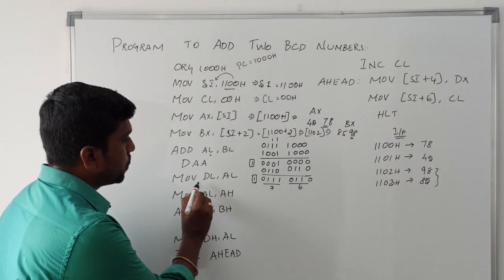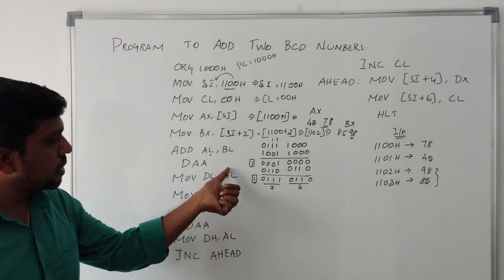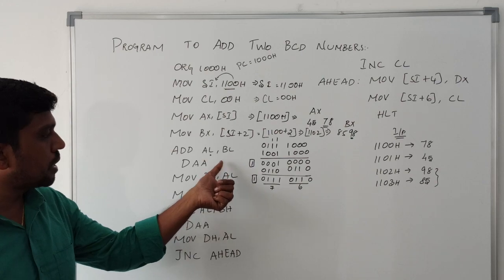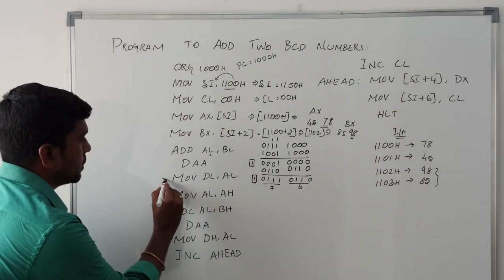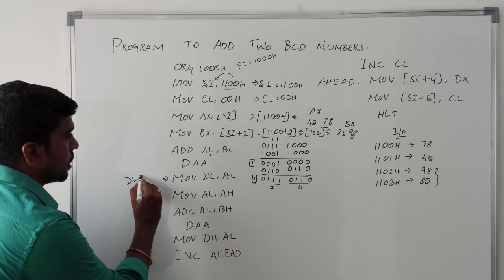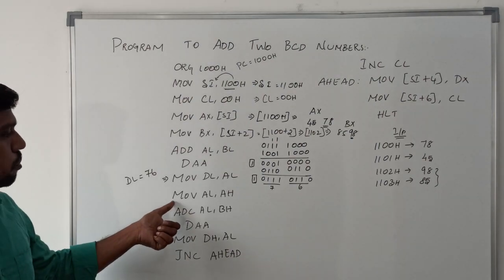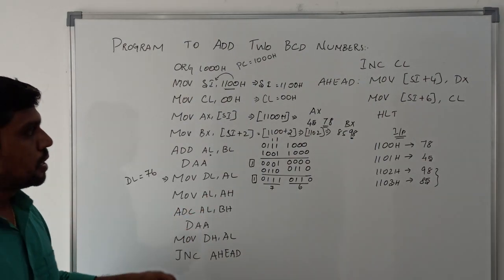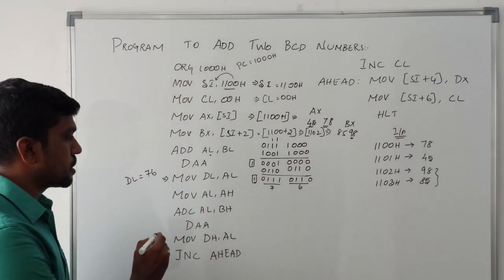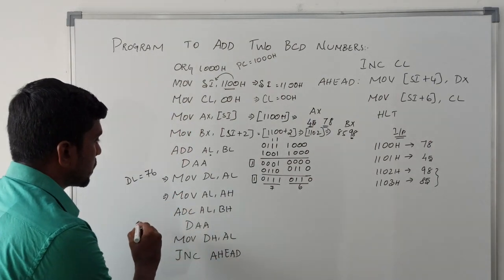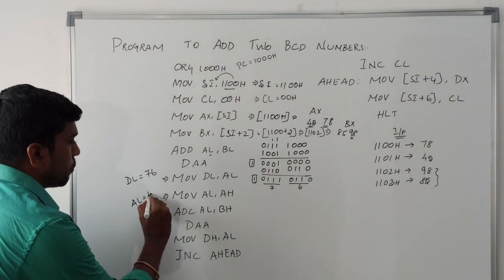The next instruction is MOV DL, AL — whatever data is present in accumulator AL register, that content is transferred to DL. After execution of this instruction, DL value is 76H. Then the next instruction moves AH to AL, so the higher 8-bit number 45H is loaded. After execution of this instruction, AL register content is 45H.